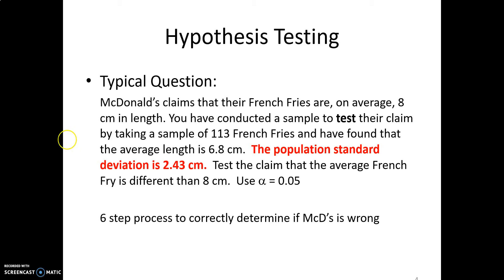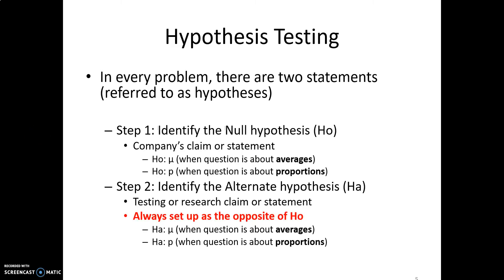There's a quick and easy six-step process to correctly determine using the laws of probability and the power of statistics to determine if McDonald's is wrong. I'm going to go through these steps. I've outlined them in the following PowerPoints. The first two steps are to identify the null hypotheses. The null hypotheses is the company's claim or statement. Usually, it's the first or last statement in the question.